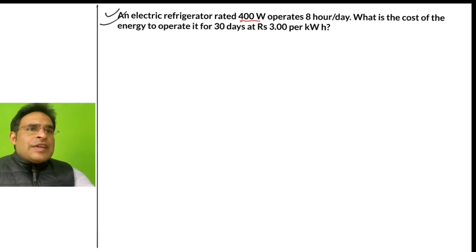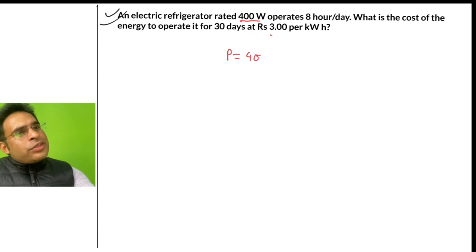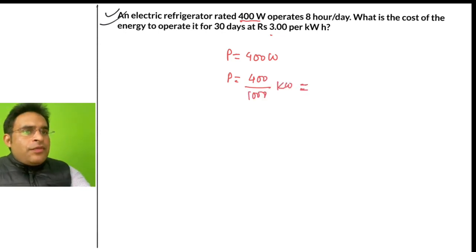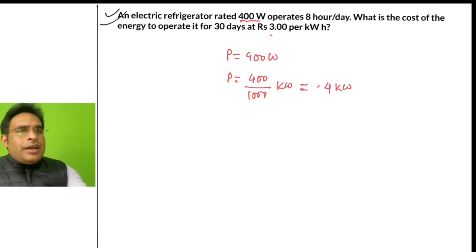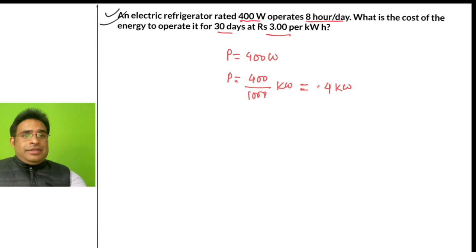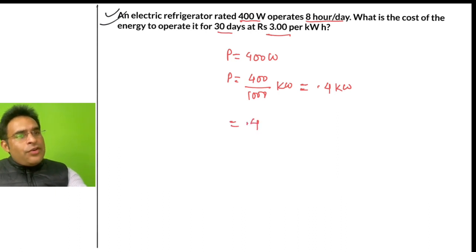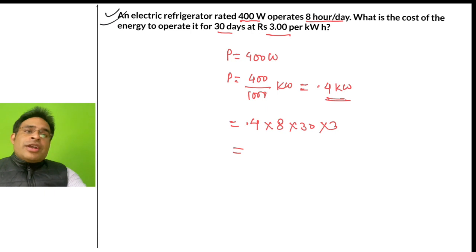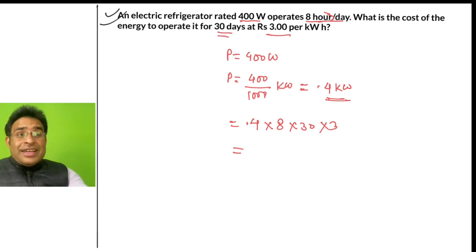Next question: An electric refrigerator rated 400 watts operates 8 hours per day. What is the cost of energy consumed over 30 days at Rs. 3 per unit? Power = 400 W = 0.4 kW. Operating 8 hours per day for 30 days at Rs. 3 per unit. Total cost = 0.4 × 8 × 30 × 3.